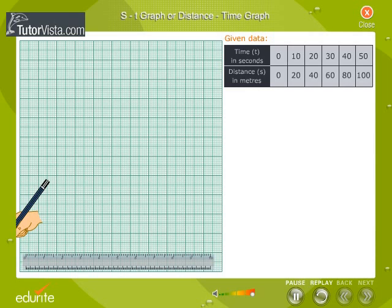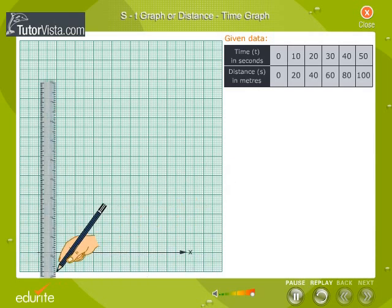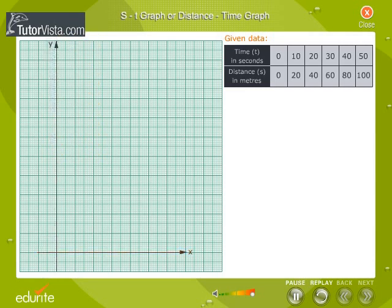Draw two straight lines, one in the horizontal direction and other in vertical direction from the left-hand side bottom corner of the graph paper. The horizontal line is called x-axis and the vertical line is called y-axis. The point of intersection of x and y-axis is called origin.